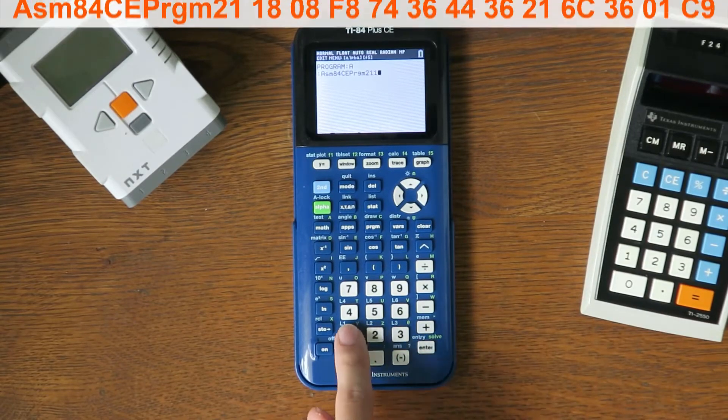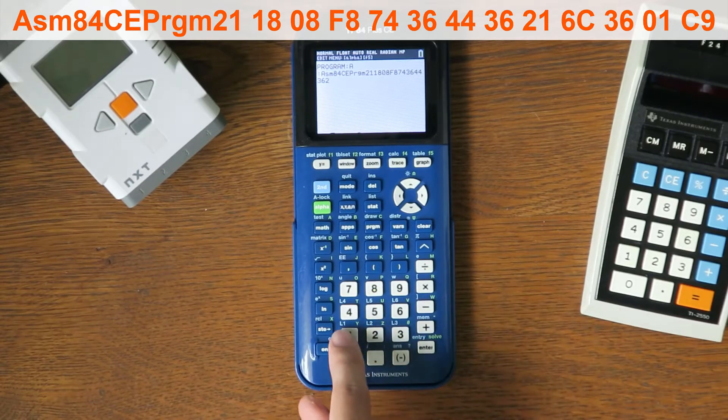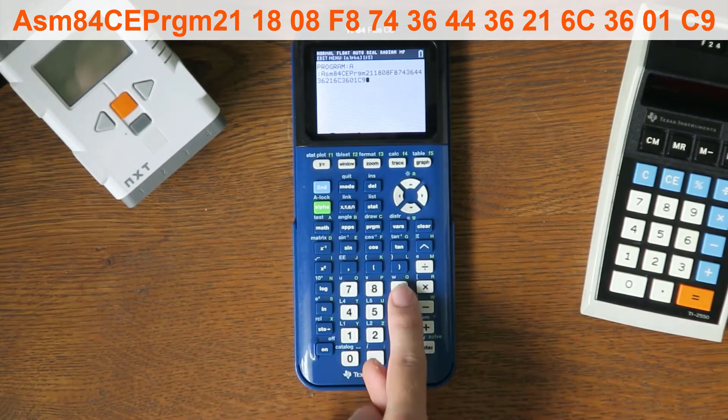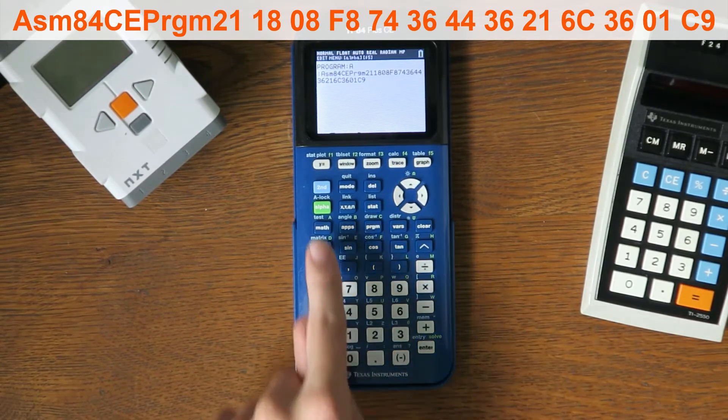Now type in exactly the code shown on the screen, only without spaces between the numbers. When you're done, the program should look like this.